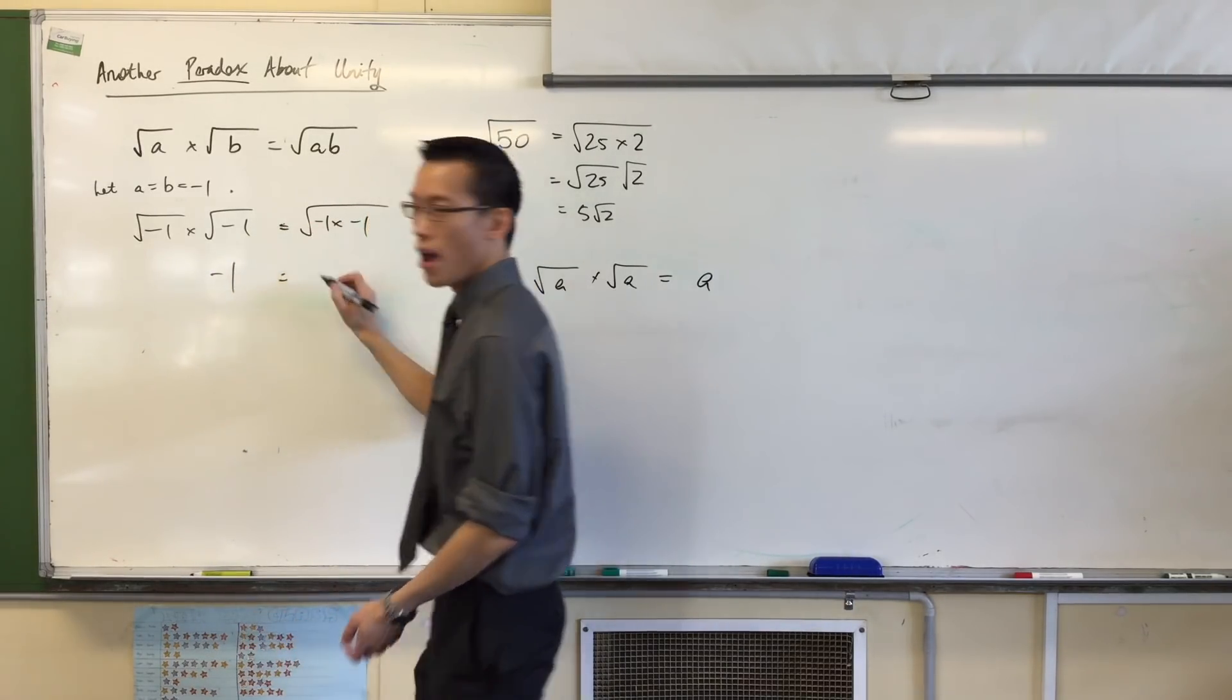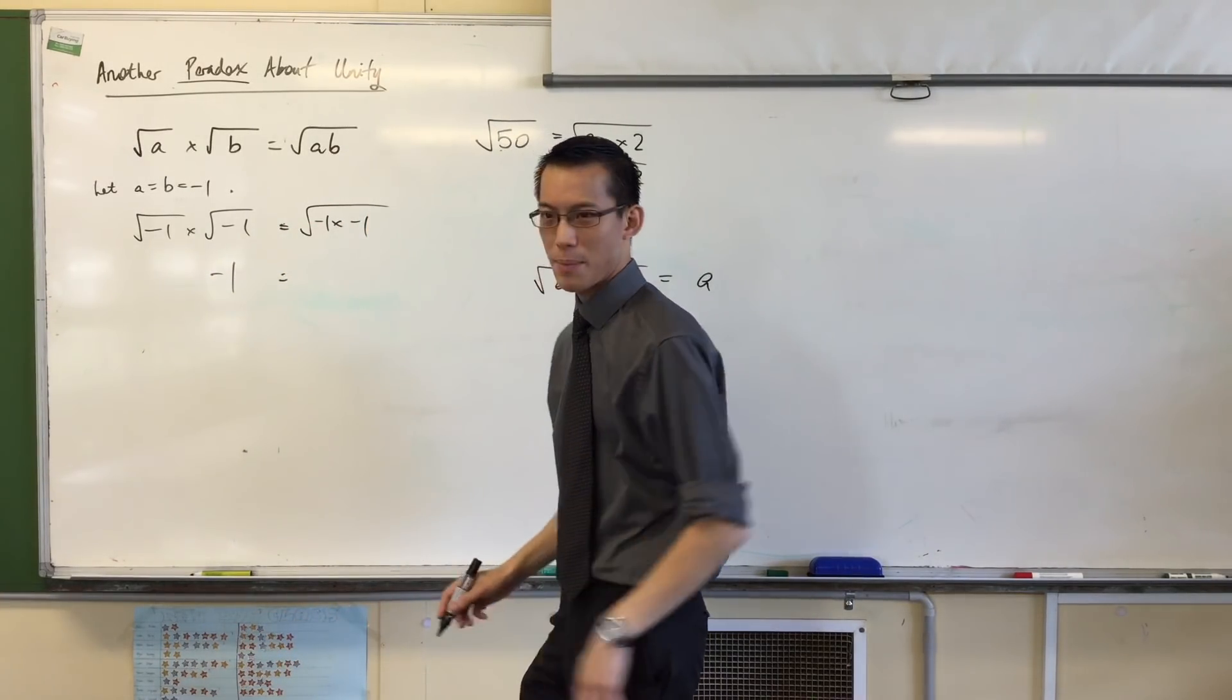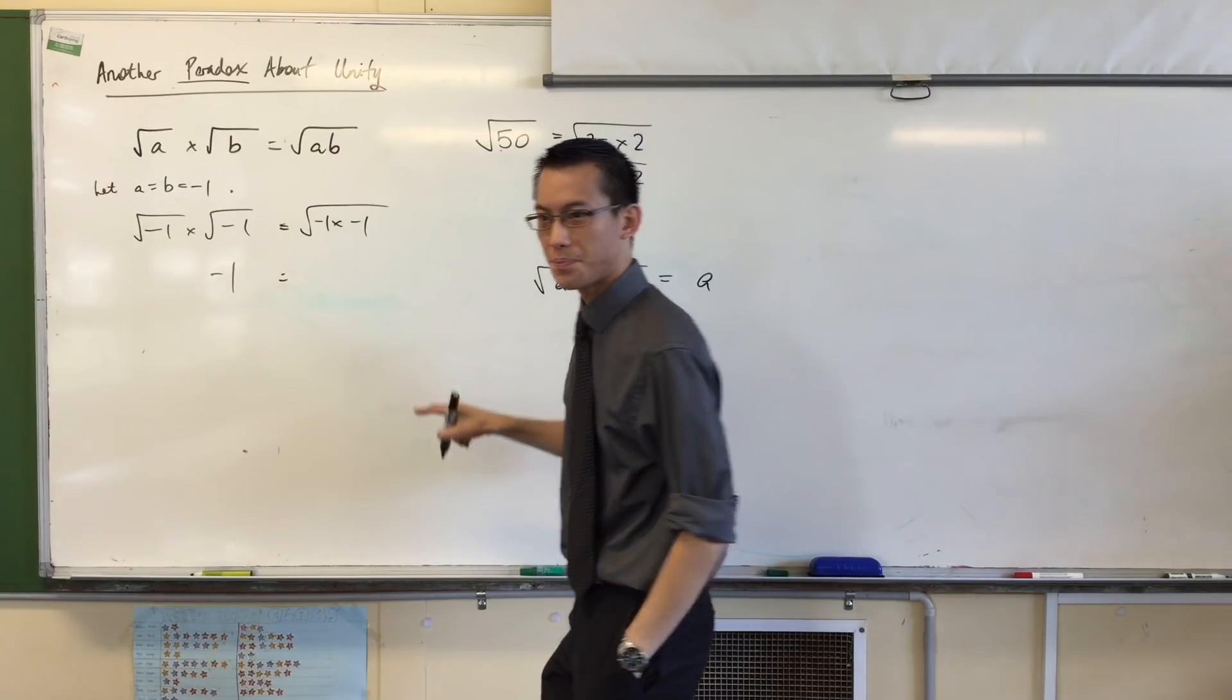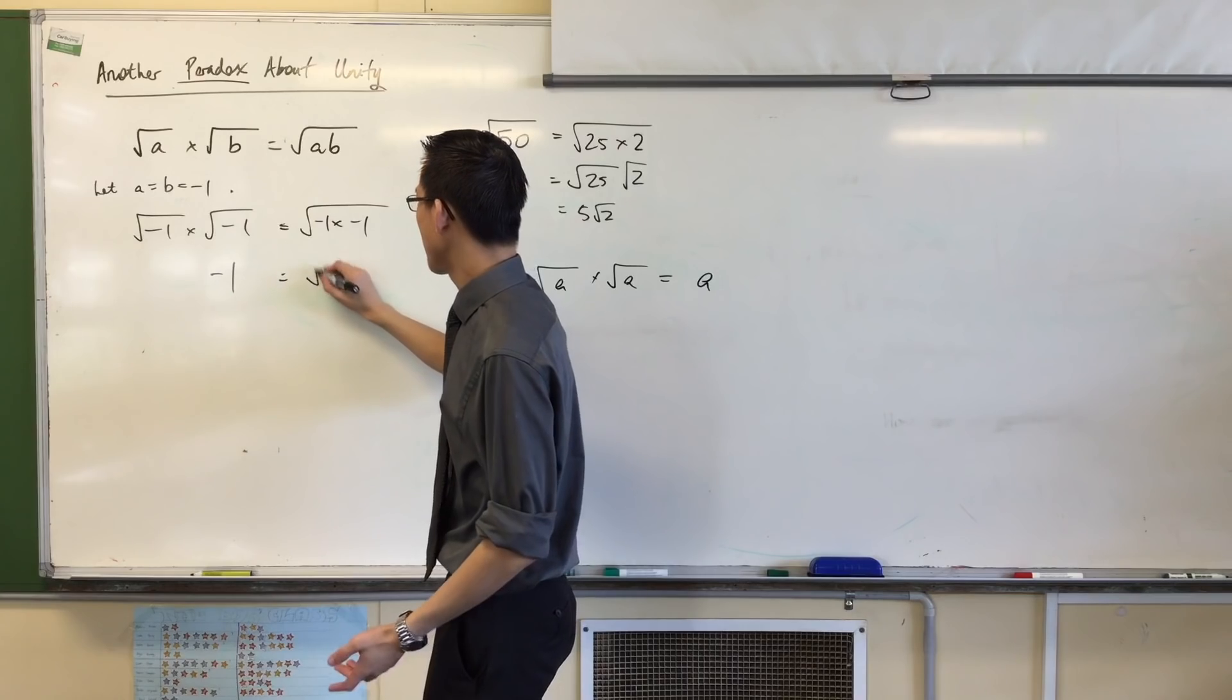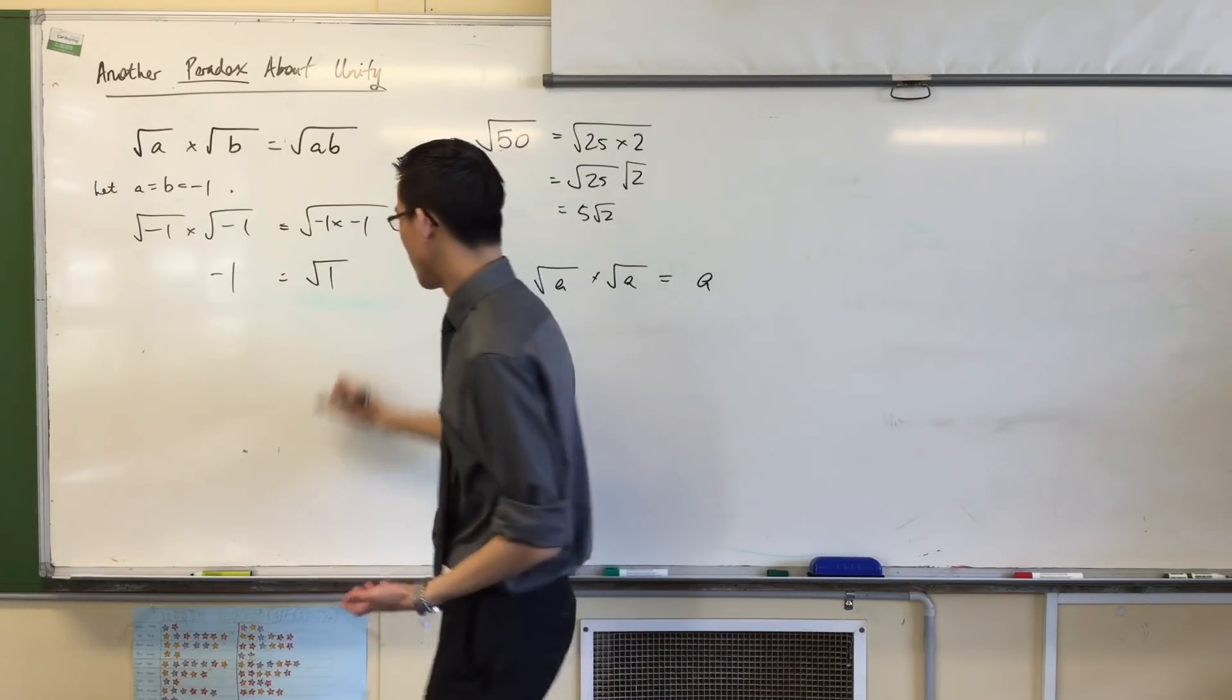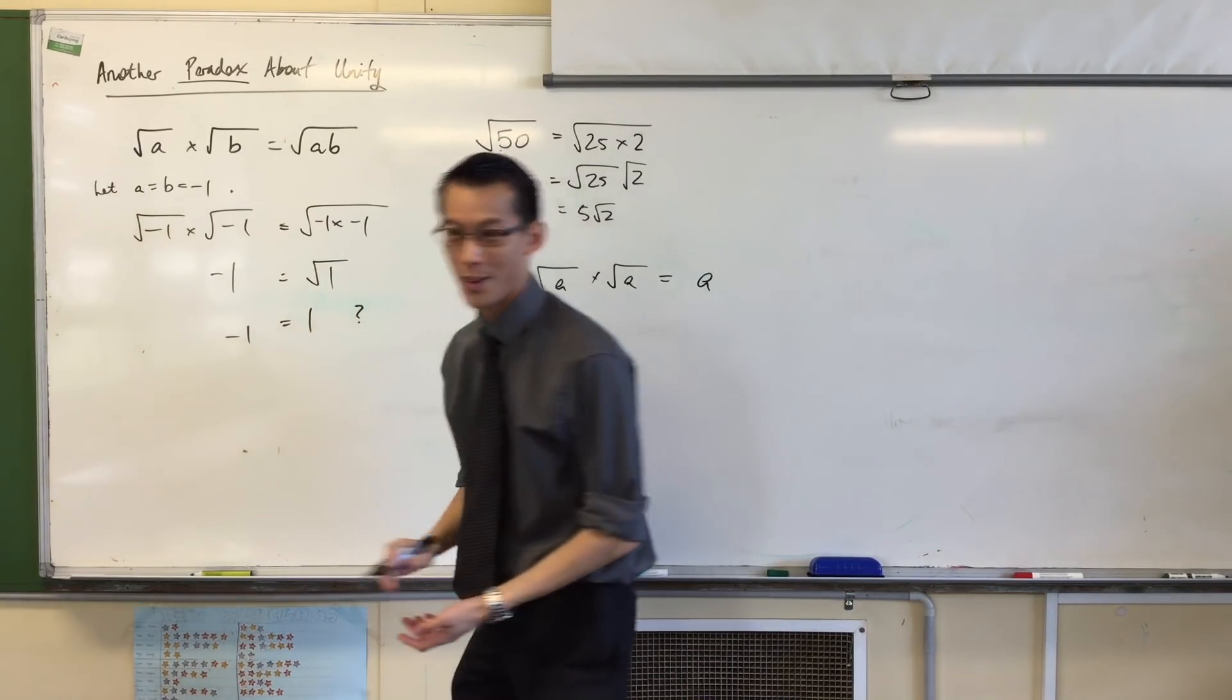Negative 1, right? That's the definition. But on the right-hand side, what's happening over here? What's underneath the square root sign? -1 × -1, which is just 1, right? And the square root of 1 is 1. So, what's going on?